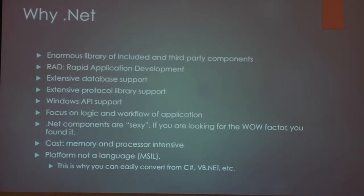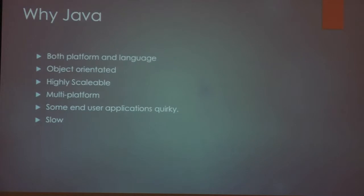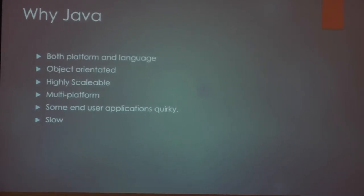.NET is a platform, not a language, because you can write in C# and VB.NET. Java is both a platform and a language — it is object-oriented, highly scalable, and multi-platform. However, a lot of end users, if they've seen Java apps, might define them as quirky — they just don't always feel like other apps.